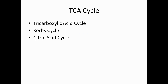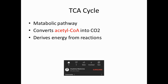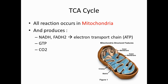The TCA cycle is a part of a metabolic pathway in which it converts acetyl-CoA into carbon dioxide. In this process it produces energy from all the reactions that occur in the TCA cycle. All reactions occur in the mitochondria, and it produces NADH and FADH2, which are used in the electron transport chain to make energy in the form of ATP.